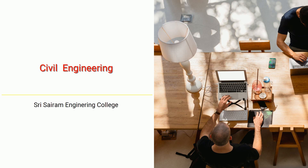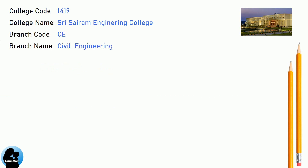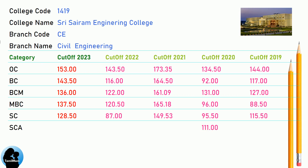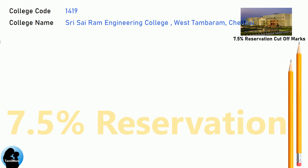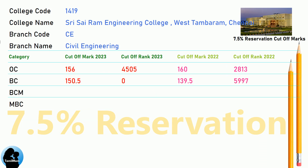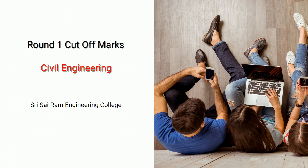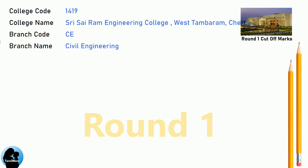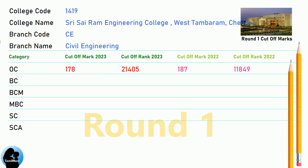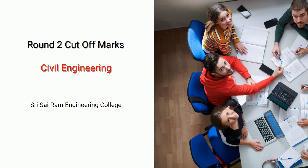BNA Cut-off for Shri Sairam Engineering College in Civil Engineering. DNA 7.5 Reservation Cut-off for Shri Sairam Engineering College in Civil Engineering. BNA Round 1 Cut-off for Shri Sairam Engineering College in Civil Engineering. DNA Round 2 Cut-off for Shri Sairam Engineering College in Civil Engineering.